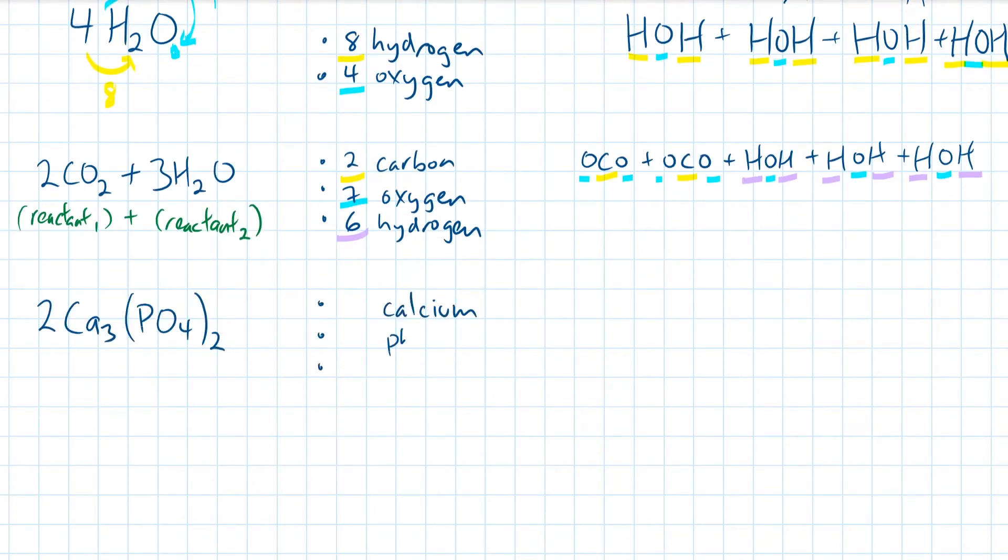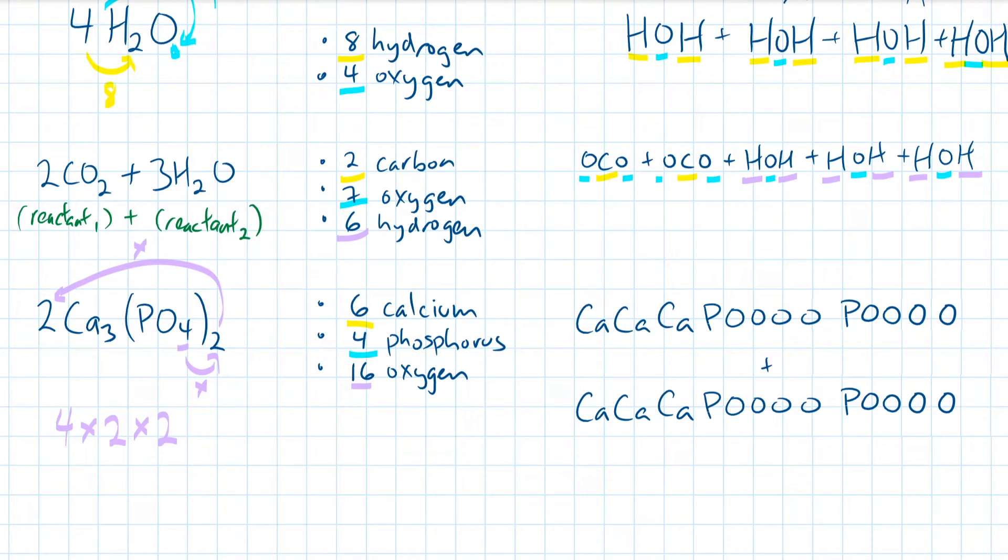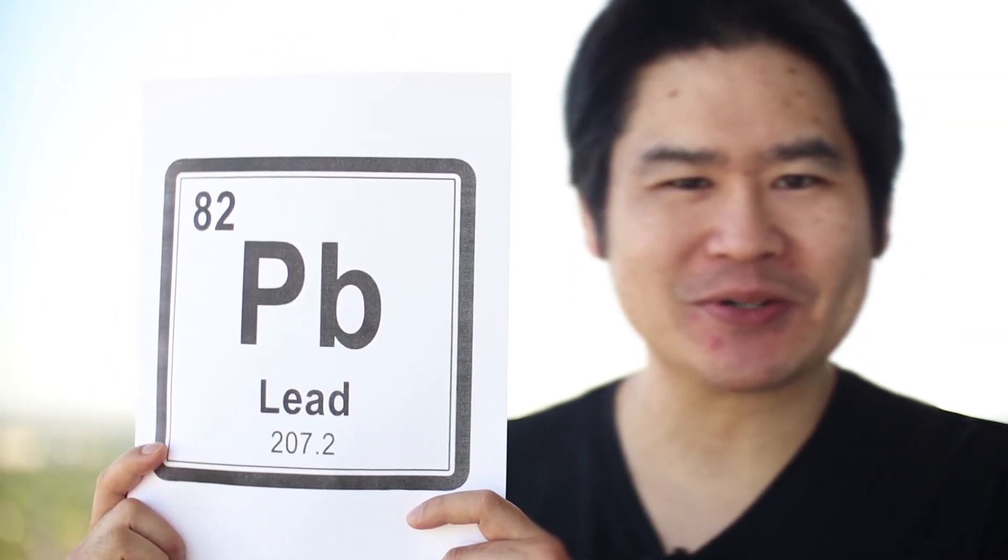Here's one more example. This chemical equation tells us that we need to have a total of 2 times 3, which is 6 calciums, 1 times 2 times 2, which is 4 phosphorus, and 4 times 2 times 2, which is 16 oxygens. Of course, you can write out this equation in its expanded format, and then say it out loud. And you thought plumbum was the funniest word in chemistry.